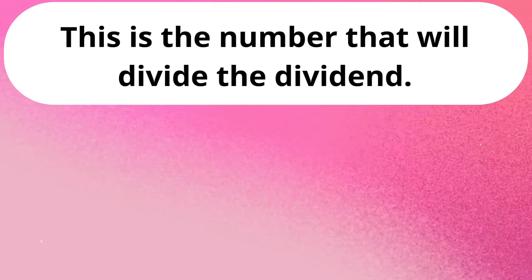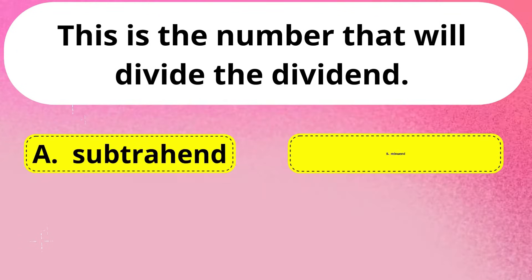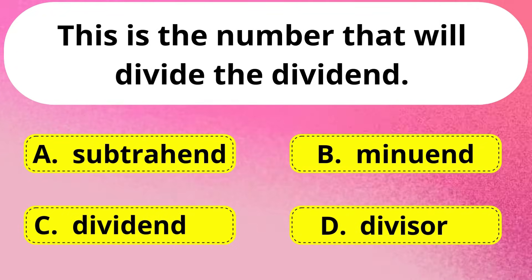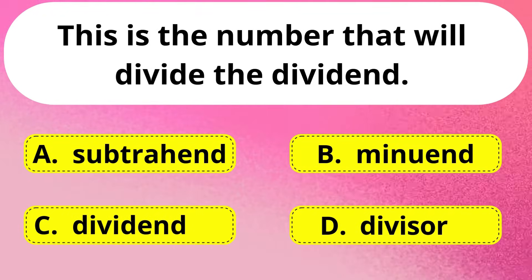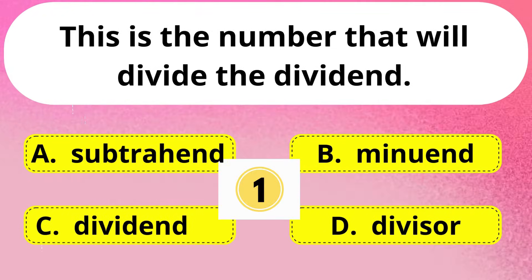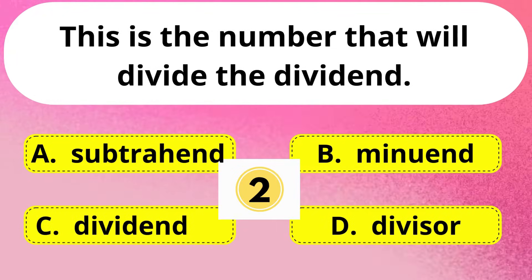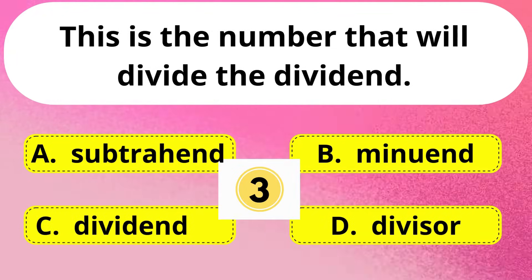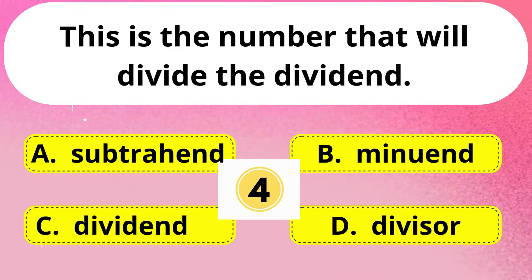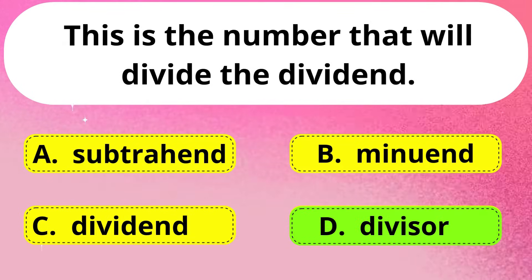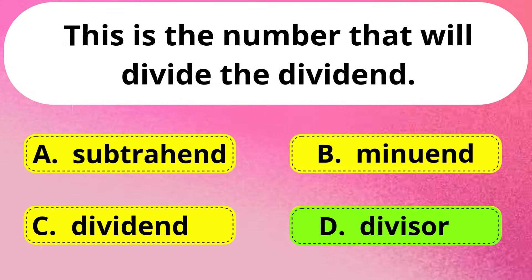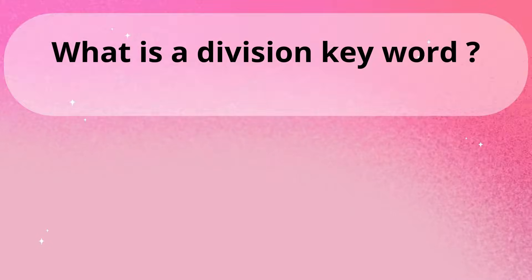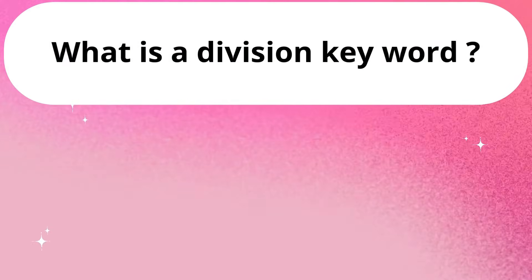Next question. This is the number that will divide the dividend. The answer is Option D: Divisor.